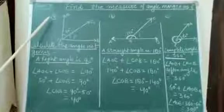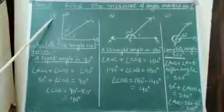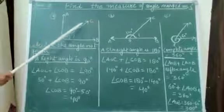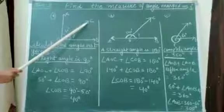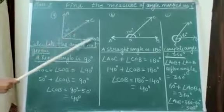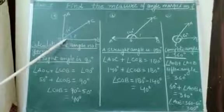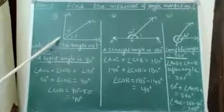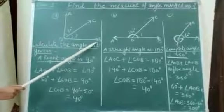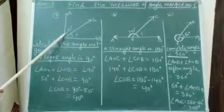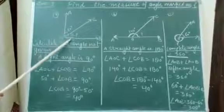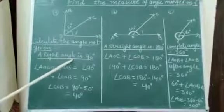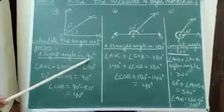See, first condition A, question number A: Calculate the angle COB. See, in this figure, angle AOB is a right angle. A right angle measures 90 degrees.